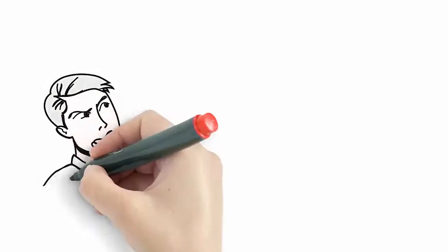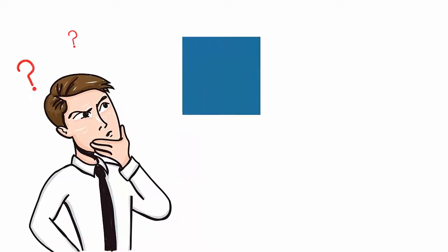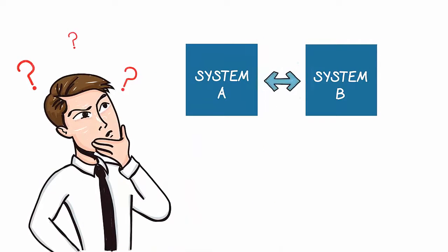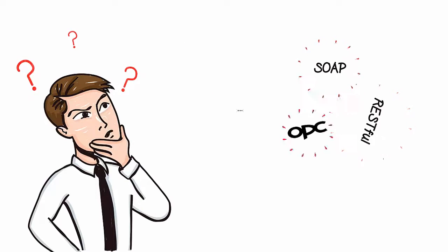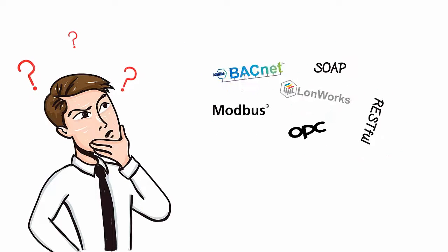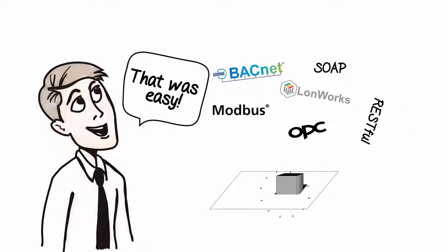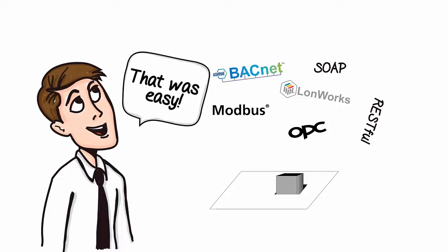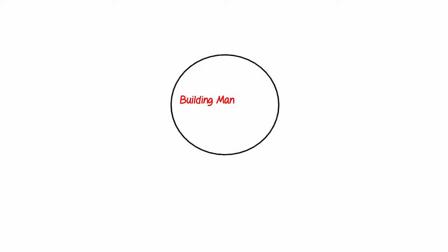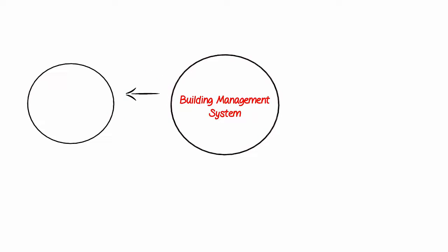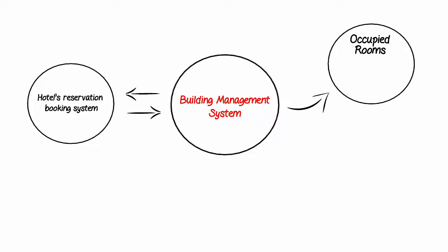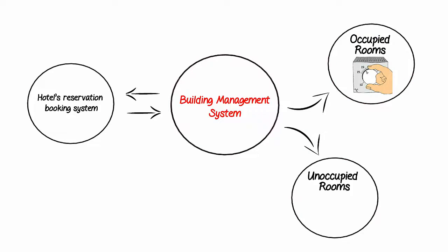What happens when you have to connect two systems together to share information? Well, if you are lucky, both of these systems speak the same language and the problem is easy to solve. But let's say you want the building management system in your hotel to get information from the hotel's reservation booking system — so you know which rooms are occupied and can control the temperature for occupied rooms differently from unoccupied rooms.